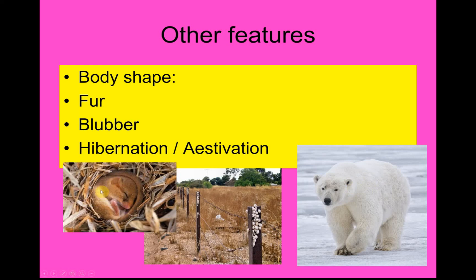Here's a dormouse hibernating. It's a tiny little creature — you can see it's rolled itself up into a ball to make its surface area to volume ratio as small as possible. It's very difficult for such a tiny creature to survive, and we'll talk about that problem in a moment.